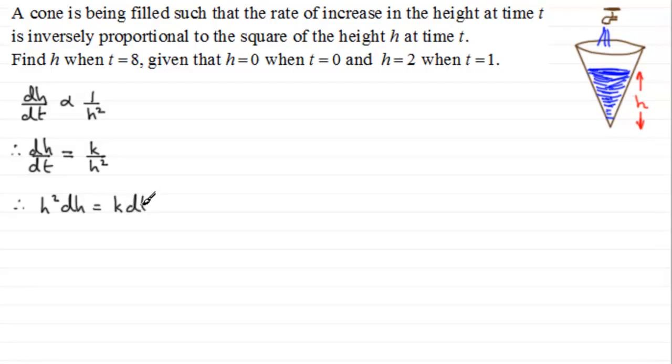And then we have to integrate both sides. Now we can integrate both of these sides. If we integrate h squared with respect to h, we're going to get h cubed over 3. And if we integrate k with respect to t, we're going to get kt.